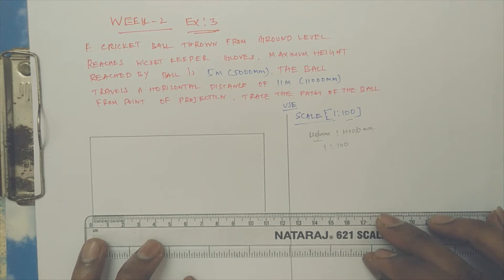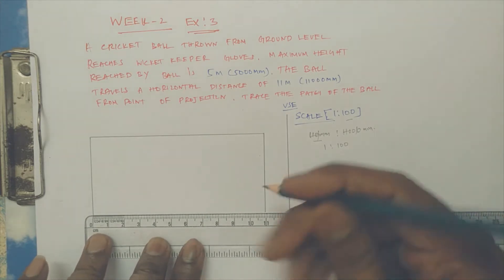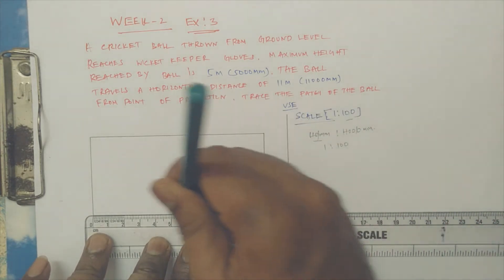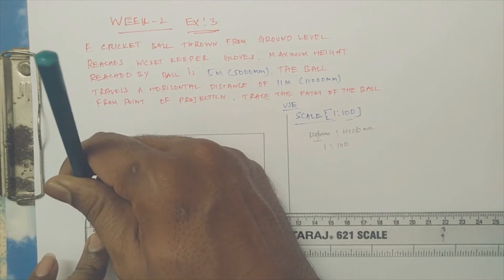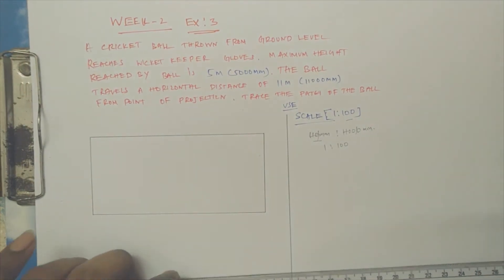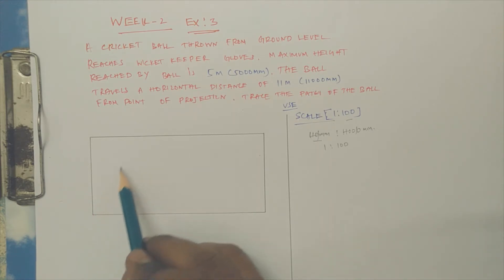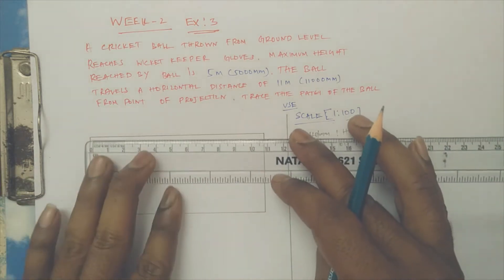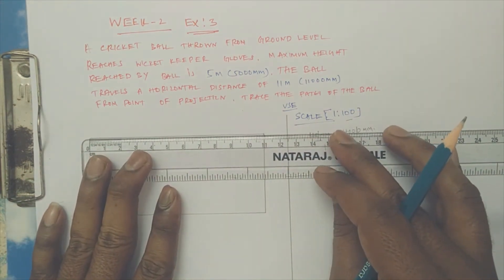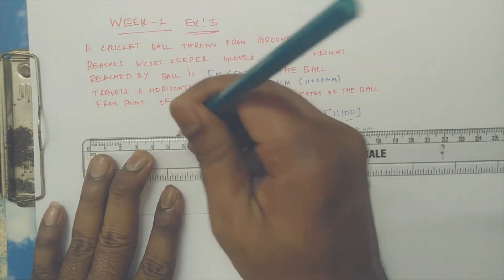And vertically 5 centimeters, so 50 mm. The ball is starting from A and towards B, so the ball is throwing in this traverse. Let us find out the path of throwing.